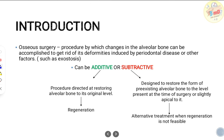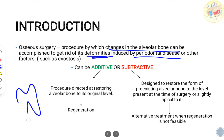Osseous surgery is a procedure by which changes in the alveolar bone are accomplished to get rid of deformities. There are many types of deformities induced by periodontal disease or other factors. Osseous surgery can either be additive or subtractive. For example, with a vertical defect you can either add a bone graft, resulting in additive osseous surgery — a regenerative procedure — or you could go for resection.